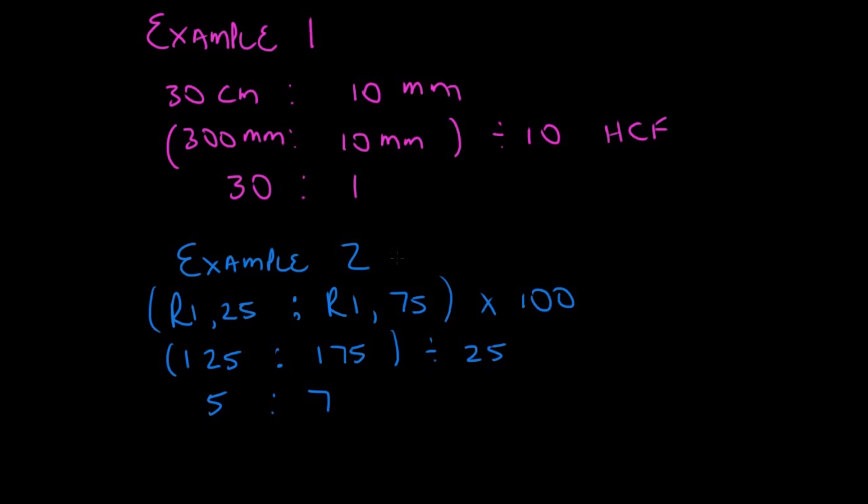Let's look at example 2. Example 2 was 1.25 as to 1.75. We multiplied by 100 so that we can have whole numbers. And we have 125 as to 175.